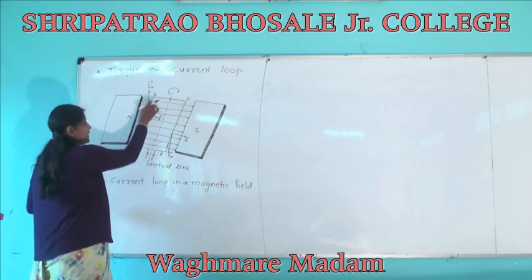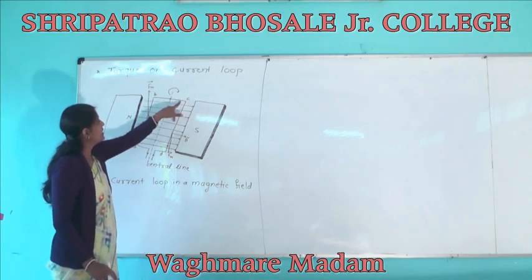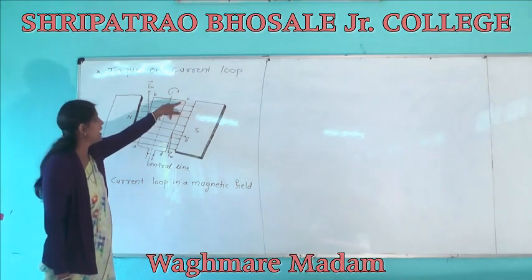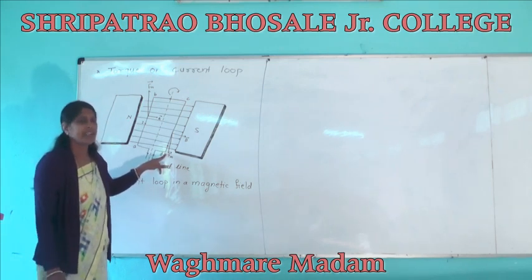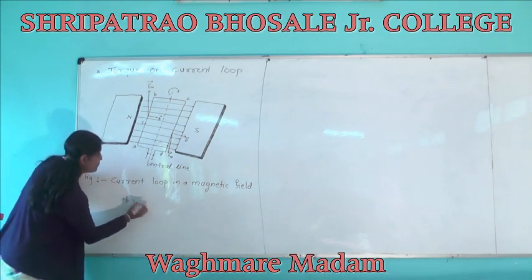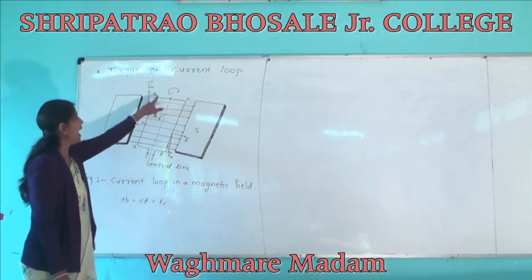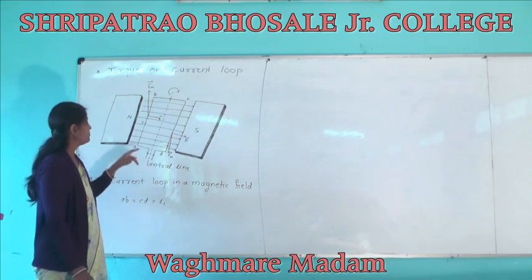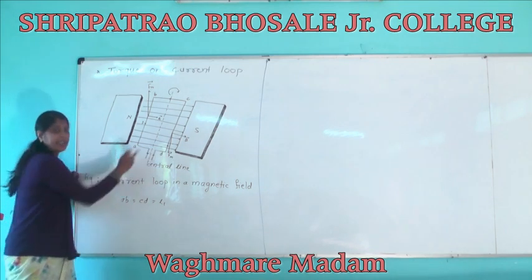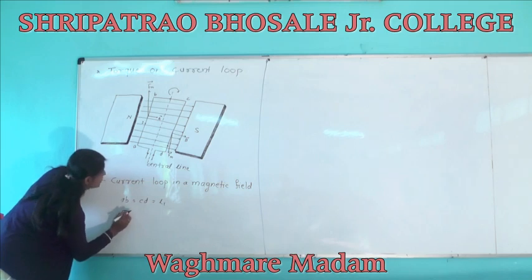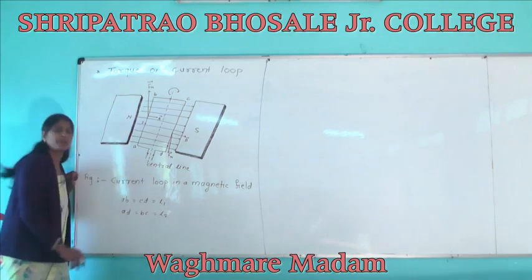Side AB has length L1, and side BC has length L2. AB and CD are equal in length, so AB = CD = L1. Similarly, AD = BC = L2.